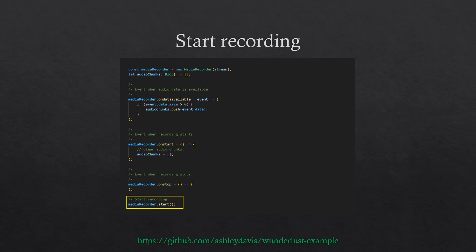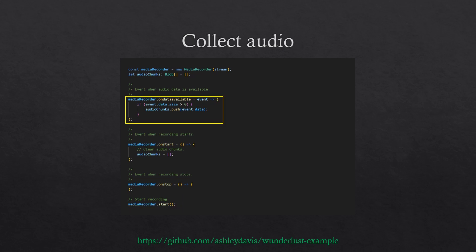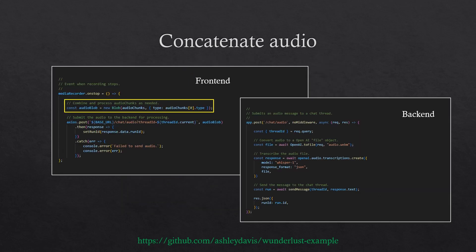To actually start the recording, we call the start function on the media recorder. During recording, the data available event is triggered, and we use that to collect chunks of audio as they come through. When the recording has stopped, we combine and process the audio chunks as needed — here we're simply combining them into one single blob of audio data.